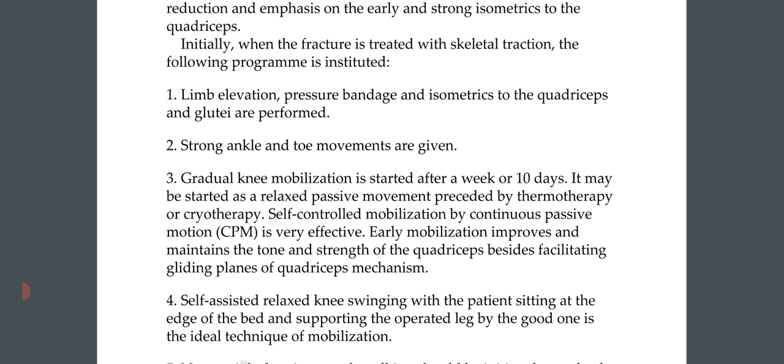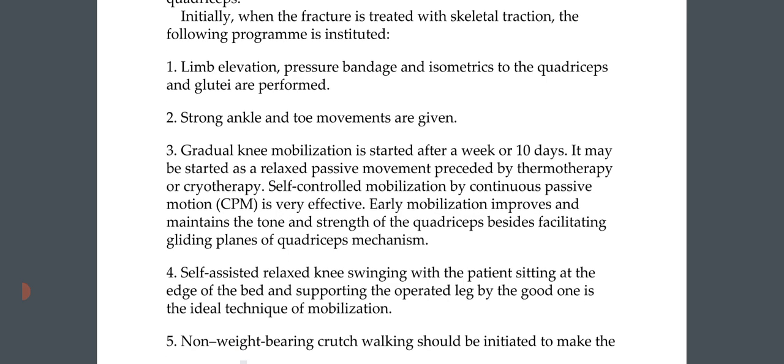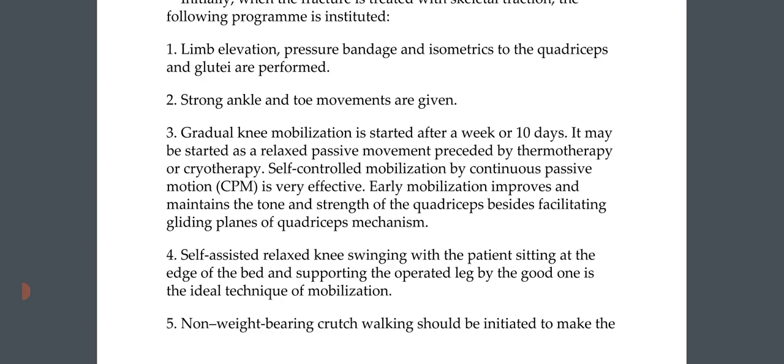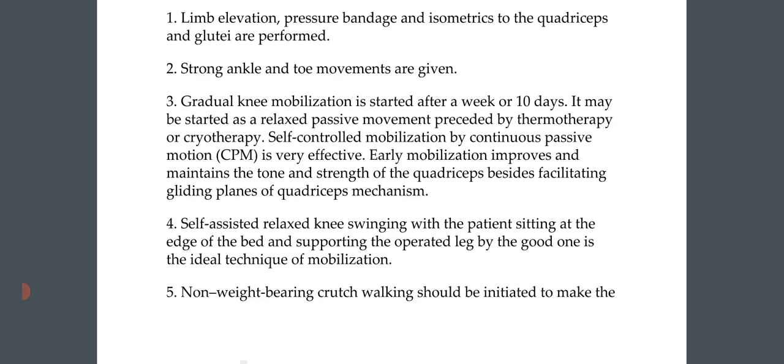Initially when the fracture is treated with skeletal traction, the following program is instituted: limb elevation, pressure bandage, and isometrics to the quadriceps and gluteals. Strong ankle and toe movements are given. Gradual knee mobilization is started after a week or 10 days, beginning as relaxed passive movement preceded by thermotherapy or cryotherapy. Self-controlled mobilization by continuous passive motion (CPM) is very effective.